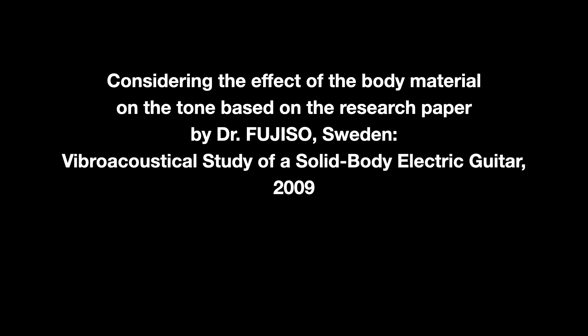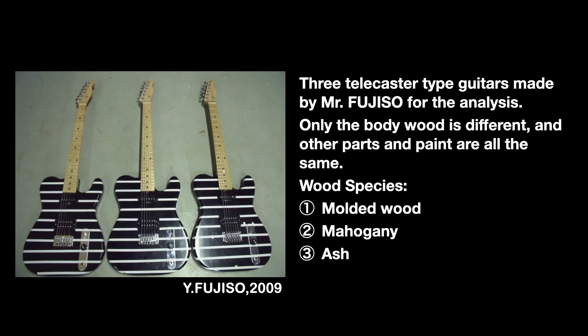I will introduce an interesting experiment conducted by Mr. Fujiso of Sweden. This experiment was done with a guitar, but it also applies to bass guitars. He made three Telecaster-type guitars and analyzed their characteristics. All three guitars are assembled with the same materials and parts except for the body material, and the same goes for painting. The body woods are molded — a cheap compressed wood — mahogany, and ash. The horizontal lines on the guitar are the baselines for laser vibration measurement.